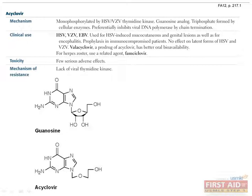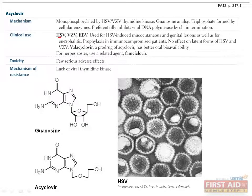Acyclovir is a guanosine analog that is monophosphorylated by HSV-VZV thymidine kinase, preferentially inhibiting viral DNA polymerase by chain termination. This agent is active against HSV, VZV, and EBV. It is used to treat HSV mucocutaneous and genital lesions, and encephalitis caused by the aforementioned viruses.